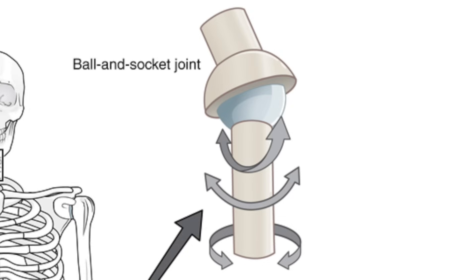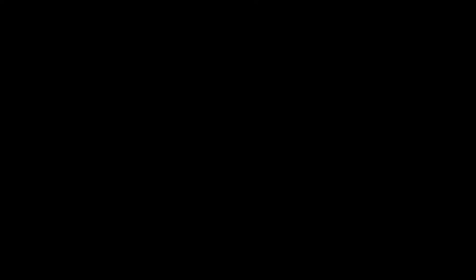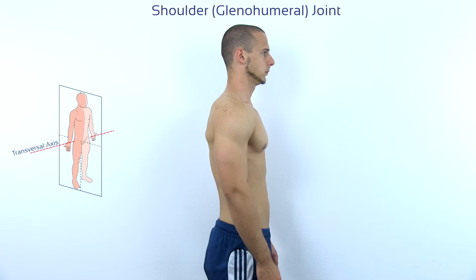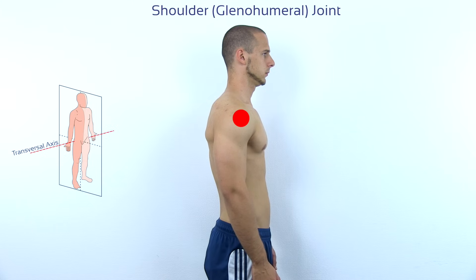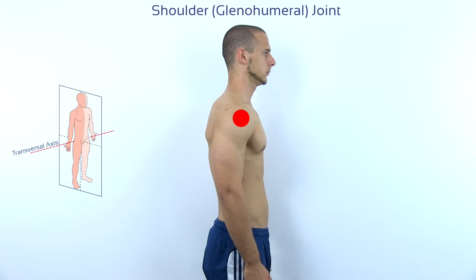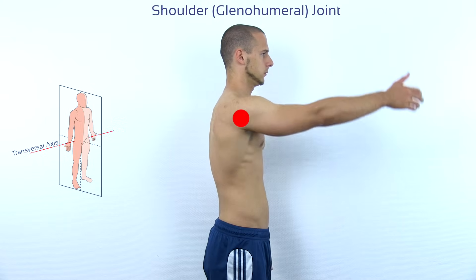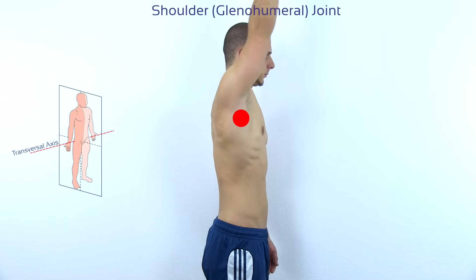This means it can move in all three planes. If we are moving the shoulder in the sagittal plane, it means that we are moving around the transversal axis. These movements in the shoulder joint are called flexion or anteversion or extension or retroversion.